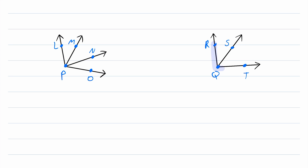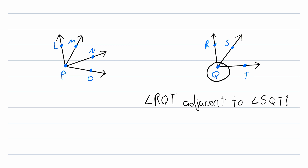Moving over to this diagram, is angle RQT adjacent to angle SQT? We see that they share a vertex of Q and they share a side of QT. However, even these angles are not adjacent because they overlap — they share some interior points. All of this space here is in the interior of both angle RQT and angle SQT. So since they share interior points, these angles are not adjacent.